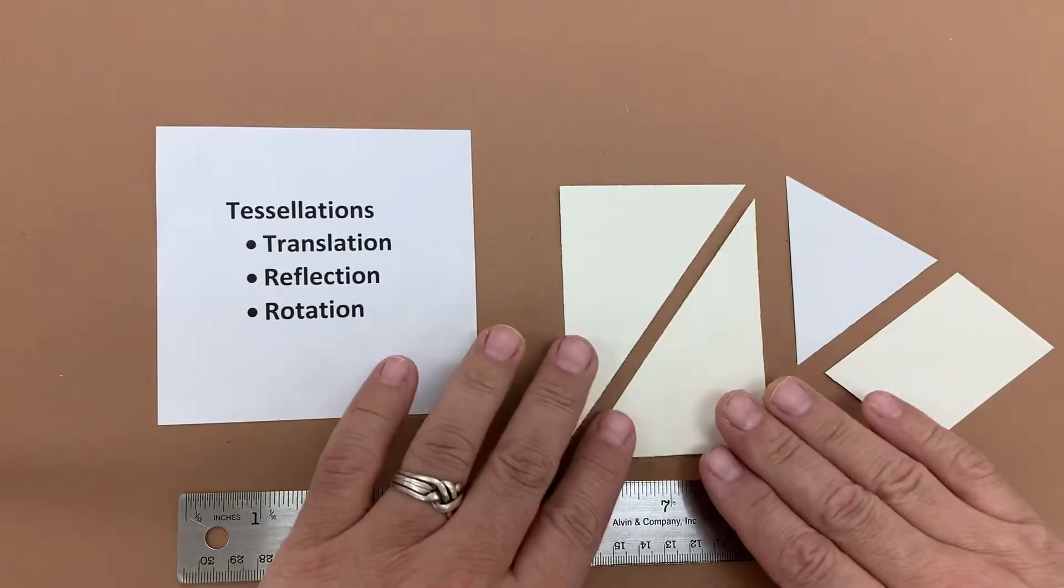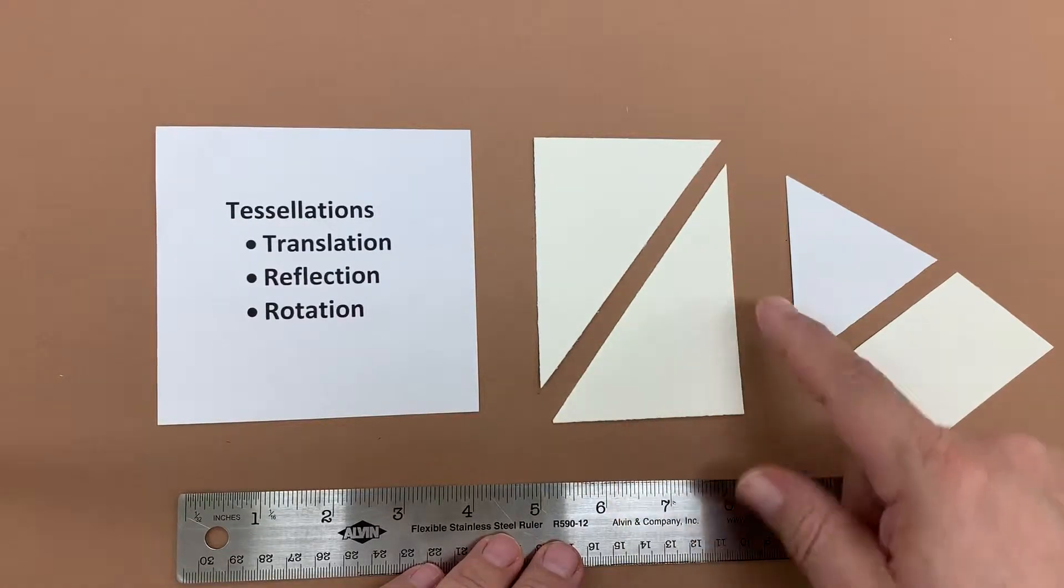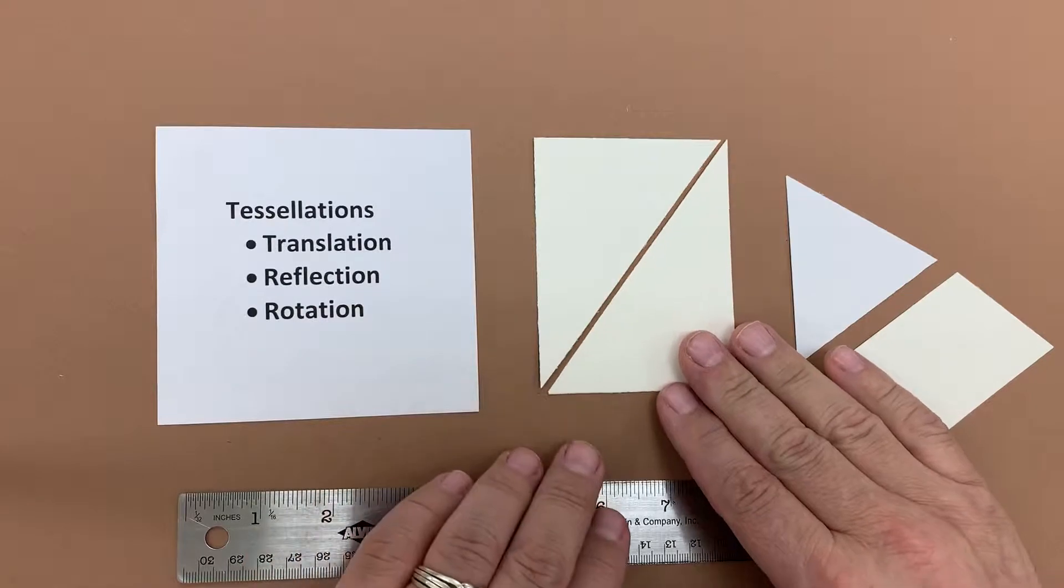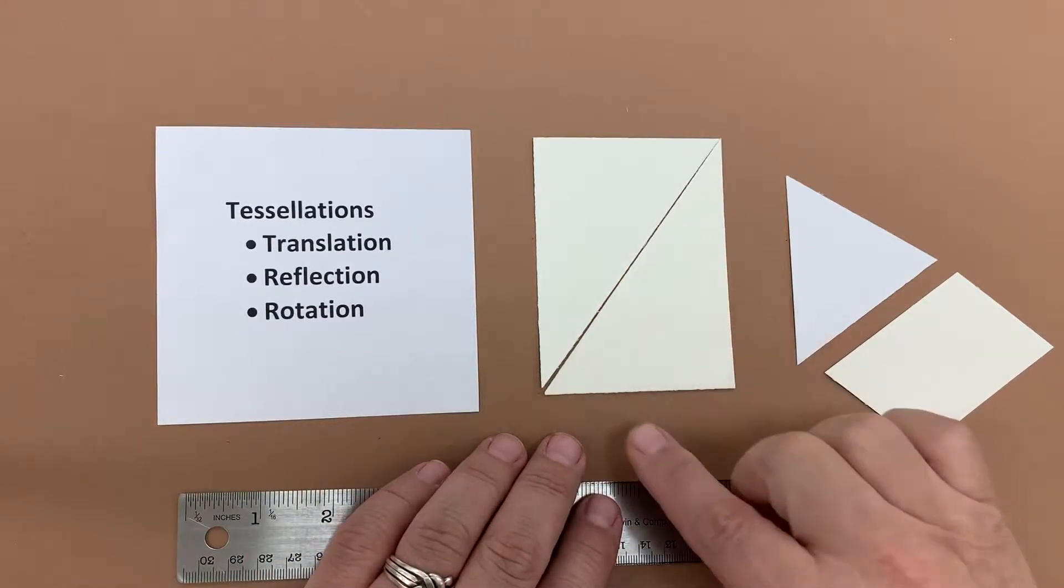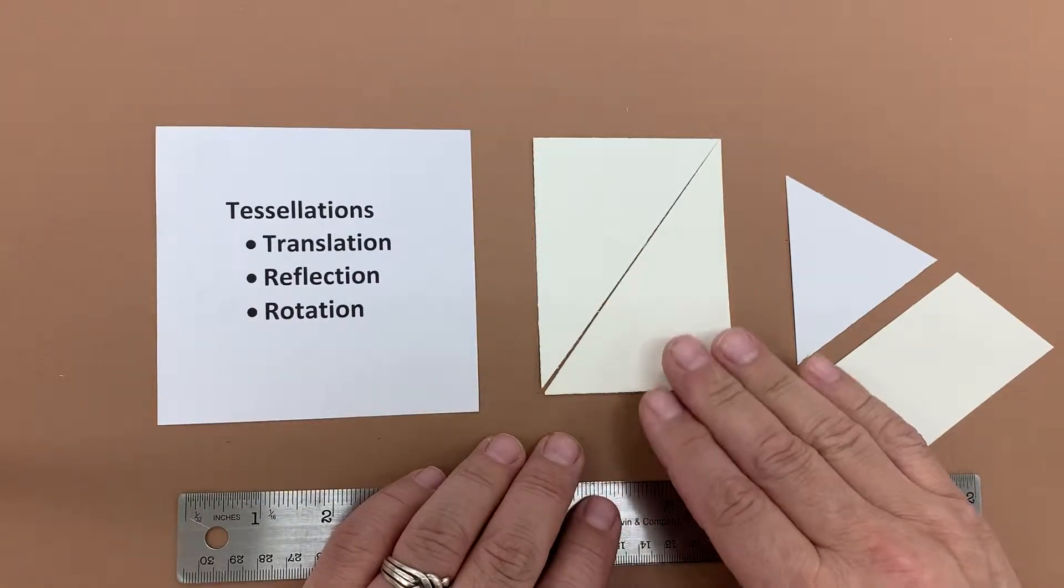I find that the easiest triangle to use for students are the right angle triangles that are 3, 4, and then 5 inches. So the quick way to make that is to create rectangles that are 3 by 4 inches and then cut them on a diagonal and you can make a whole bunch of them very quickly.